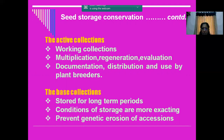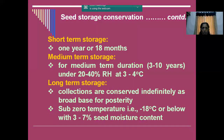Now what are the different methods of storage? Short-term storage - seeds can be stored only up to 18 months. Medium-term storage - seeds can be stored up to 3 to 10 years at 20 to 40% relative humidity at 3 to 4 degrees centigrade. This medium-term storage forms the active collection - you store in the medium-term storage facility and materials are taken for characterization, evaluation, or for supply when somebody requests the material.